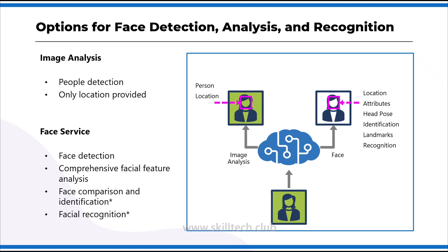When you say image analysis and when you say face analysis, these are two different things. Image analysis is mostly going to do people detection, providing only a location for that particular person. When we say we are detecting faces, the face detection service is actually going to find out the location of the face and other attributes like head pose, identification, landmarks, recognition, or comprehensive facial feature analysis — like whether the person is wearing glasses or masks. You can also do face comparison and identification using the face recognition service, which can identify a unique person from a group of people in images.